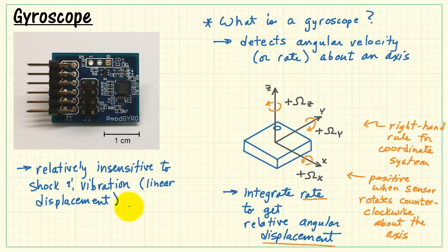Gyroscopes are sensitive to rotation, but not so much linear displacement, and that means they are relatively insensitive to shock and vibration.